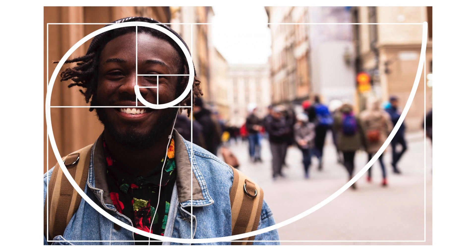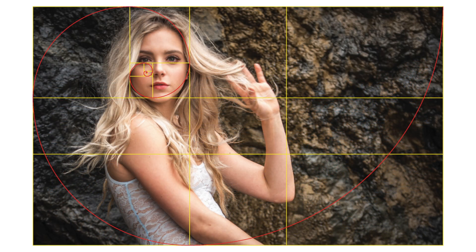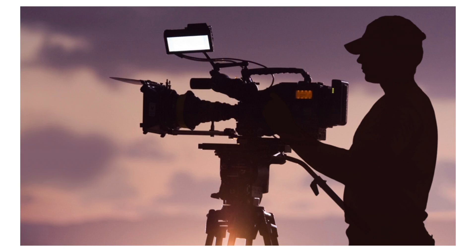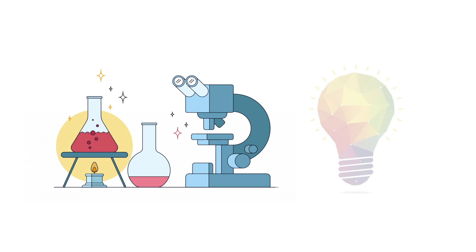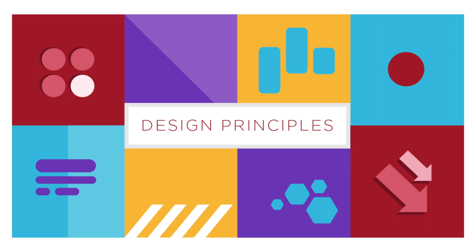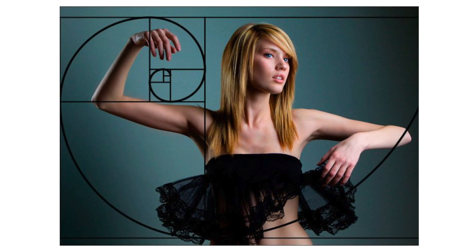While the Fibonacci Spiral might work well when composing a portrait, for example, the Phi Grid might work well for a landscape. These guides are flexible and not limited to any one particular type of image or scene. As with all things in photography and cinematography, experimentation and creativity are key factors. Never let a design principle dictate how you photograph or shoot a scene — simply use it as a tool to guide you in achieving a strong composition and complement your own creativity.